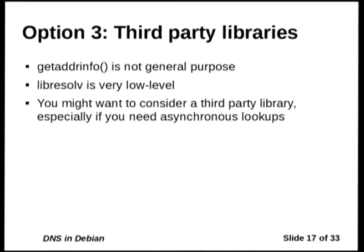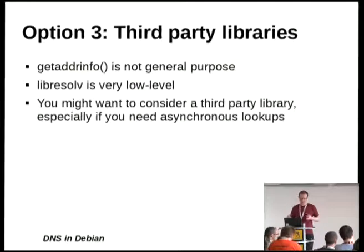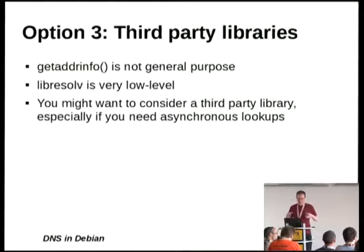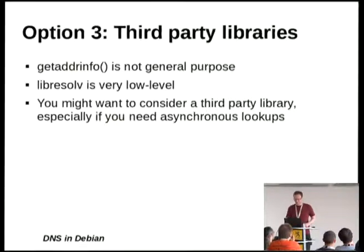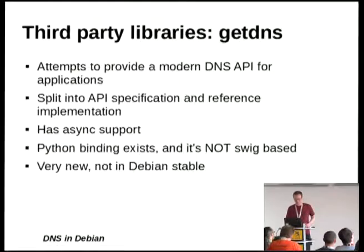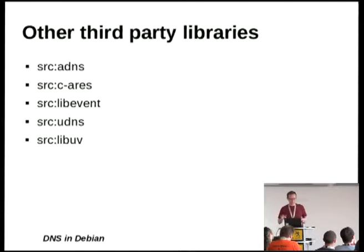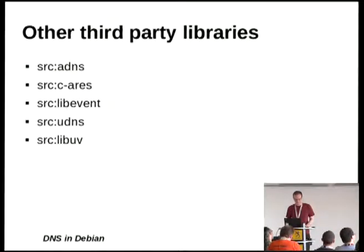The third option is third-party libraries. If you have a use case that can't be served by getaddrinfo and you're not a fan of libresolve's very low-level, crufty interface, you might want to consider a more modern third-party library — especially if your use case requires a lot of asynchrony. If you look at the available third-party libraries that do DNS lookups, a lot of them — ADNS, c-ares, libevent, and libuv — are very focused on the asynchronous use case, almost to the exclusion of other opportunities offered by the DNS data model.